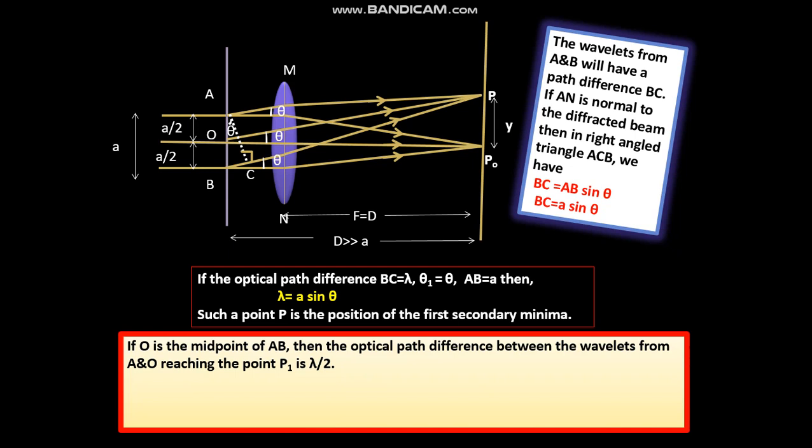If O is the midpoint of AB, then the optical path difference between the wavelets from A and O reaching the point P1 is lambda by 2. Similarly, path difference of the wavelets arriving at P is lambda by 2.